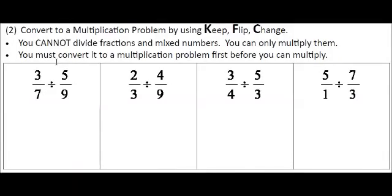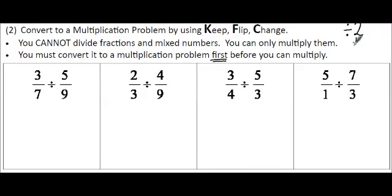The biggest difference between multiplying and dividing fractions is that once we get them into fractional form, we need to convert it to a multiplication problem using keep, flip, change. You cannot divide fractions or mixed numbers — you can only multiply them. So you need to convert it to a multiplication problem first. This works because dividing something by 2 is the same thing as multiplying by its reciprocal, or multiplying by 1 half. That's why we're going to be flipping the second fraction and changing it to multiplication.